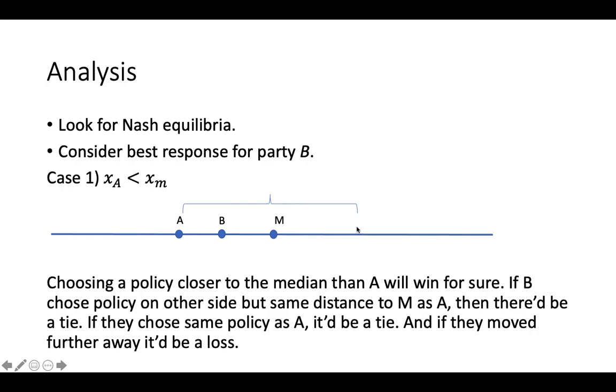If B chose a policy on the other side, but exactly the same distance, so exactly at this line, then that would be a coin flip. They'd have a one-half chance of winning. If they chose the exact same policy as A, they would also have a one-half chance of winning. And if they chose anywhere farther away on either side, they would lose for sure.